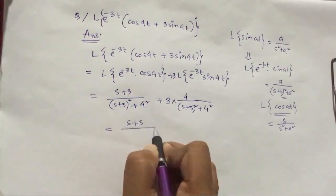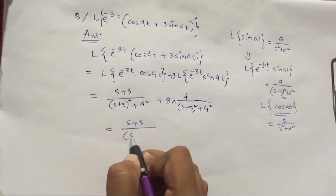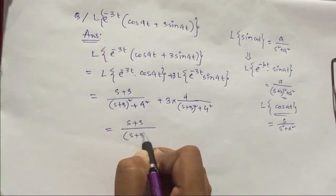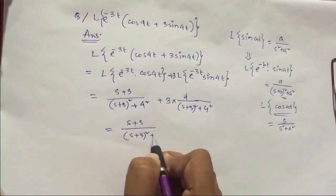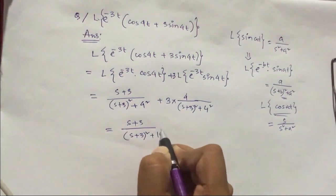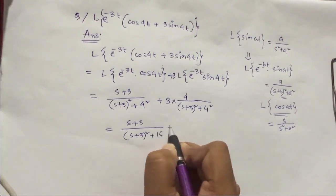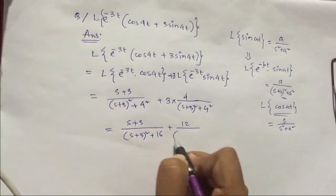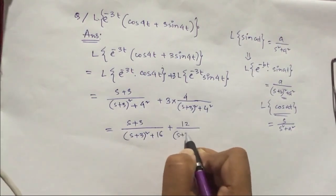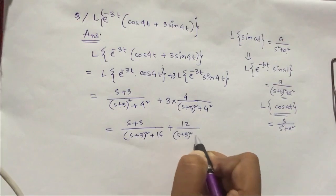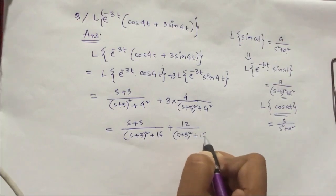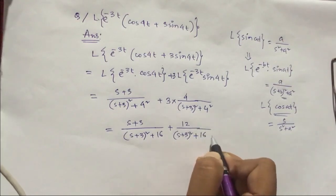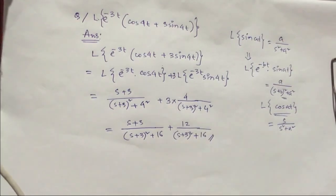Simplifying, the numerator becomes (s+3) + 12, giving (s+15)/((s+3)²+16). So this is the answer for the second question.